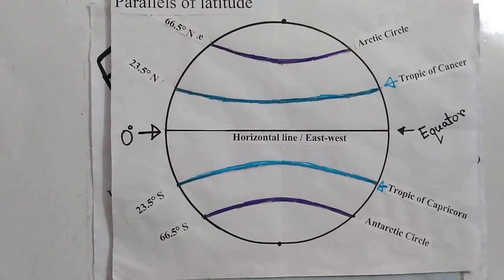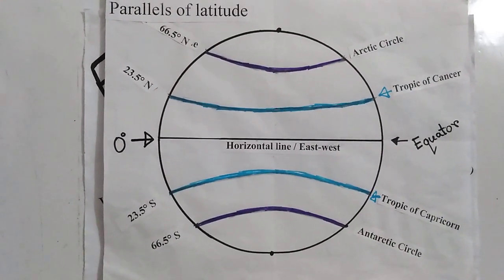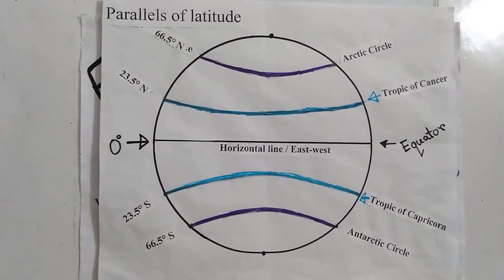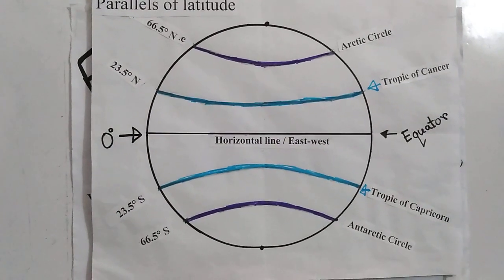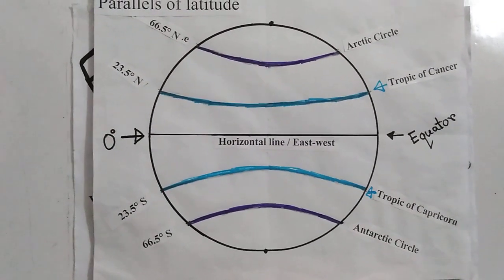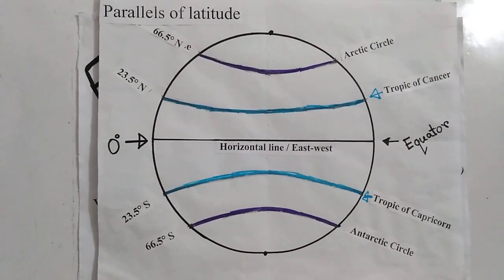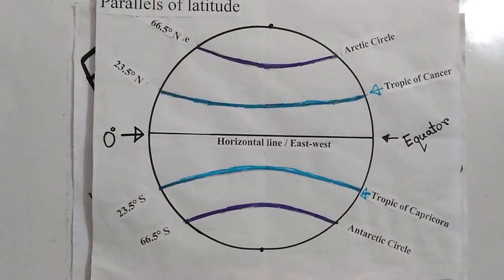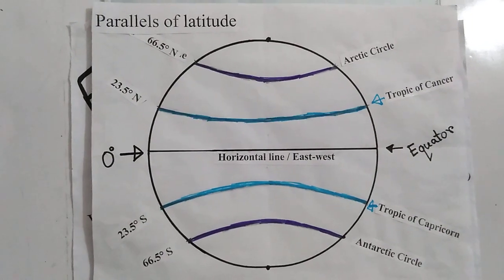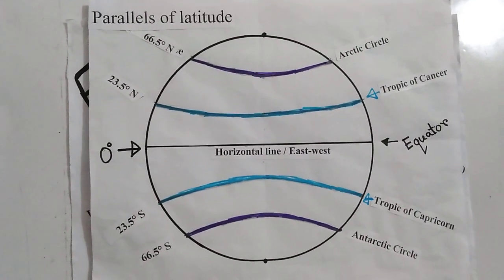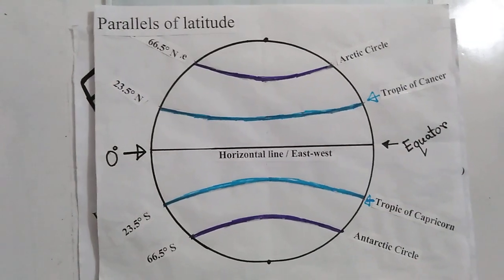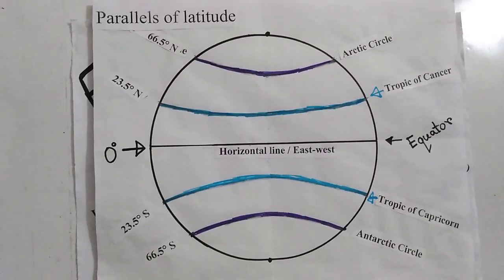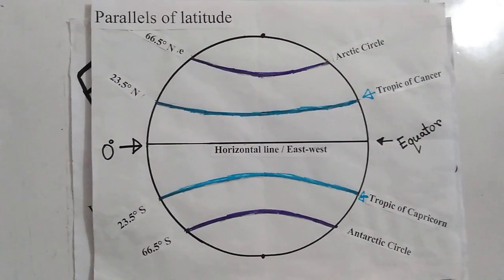Now, parallels of latitude. Many lines are imagined from west to east, like the equator. They are called parallels of latitude. These lines are full circles and parallel to each other. They are horizontal lines. The circumference of latitudes is not equal. They run from west to east. We imagine 90 parallels of latitude in the northern hemisphere and 90 parallels of latitude in the southern hemisphere. In the figure, some important parallels of latitude are given.